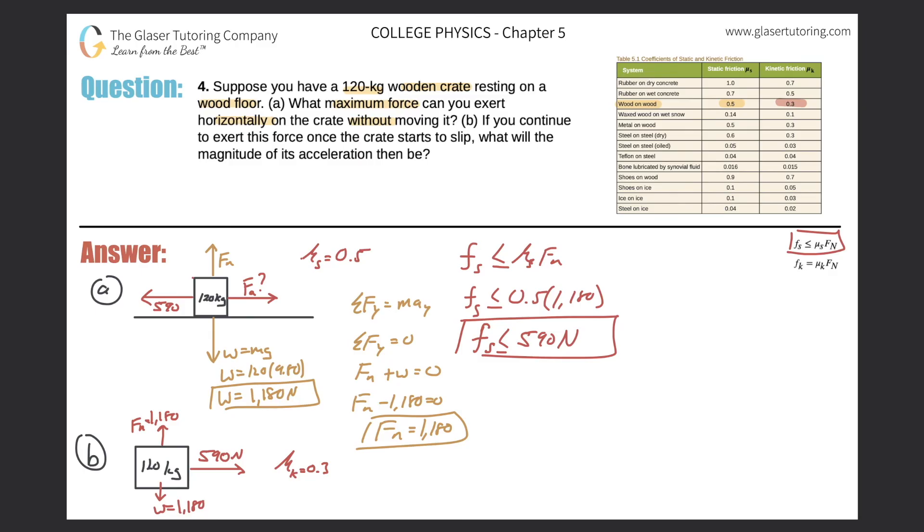And we can use the same formula. Well, it's basically the same formula, but it just doesn't have a less than or equal to sign. And instead, it's the coefficient of kinetic friction. So now what I'm going to do to solve letter B, I say that the force of kinetic friction will be equal to the coefficient of kinetic friction multiplied by the normal force. So we have the force of kinetic friction being equal to 0.3 times the normal force of 1180. So the frictional force while in motion is equal to 0.3 times 1180.